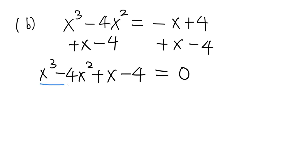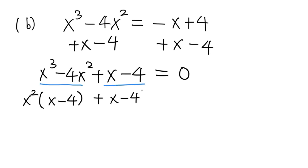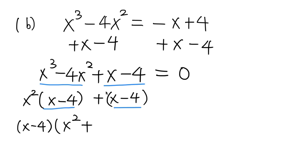So we're going to use the grouping method, and we're going to group the first two terms and then group the second two terms. The first two terms have x squared as a common factor, so we pull it out and x minus 4 is left. The second two terms, x minus 4, have no common factor between them, so we just leave them in parentheses. By doing so, we come up with the common factor of x minus 4. We pull it out, and what's left is x squared for the first term plus 1. So this equals 0.